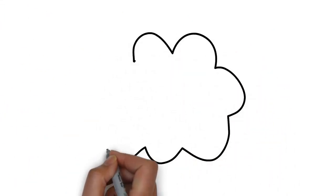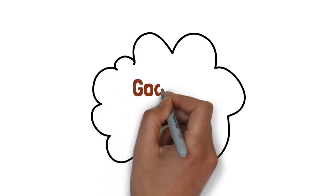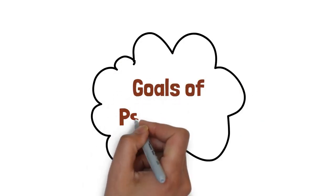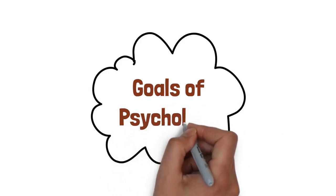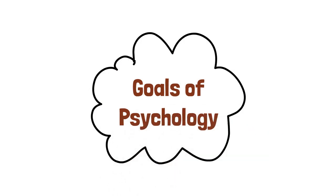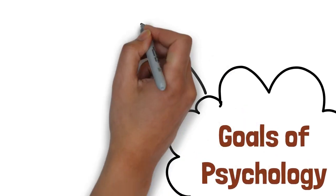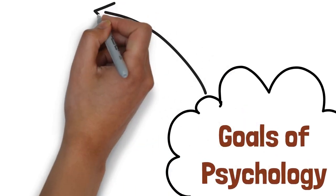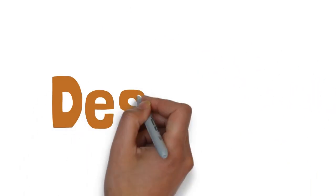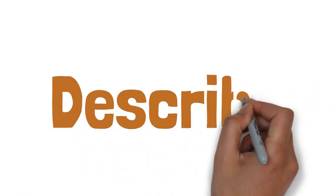Every field has its goals. The goals of psychology are to describe, understand, predict, and change or modify behavior. The first goal: describe.